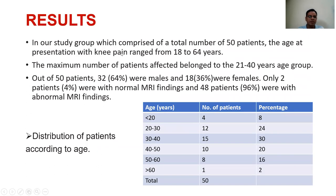Results. In our study group comprising a total of 50 patients presenting with knee pain, age ranged from 18 to 64 years. The maximum number of patients affected belonged to the 21 to 24 years age group. Out of 50 patients, 32 were male and 18 were female. Only 2 patients had normal MRI findings and 48 patients had abnormal MRI findings. Distribution of patients according to age is tabulated here.